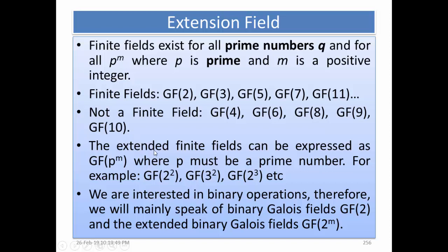Extended finite fields can be expressed as GF(p^m) where p must be a prime number — for example GF(2^2), GF(3^2), GF(3^3). Here you can see the bases are prime numbers. We are interested in binary operations, so we will mainly speak of binary Galois fields GF2 and extended binary Galois fields GF(2^m).